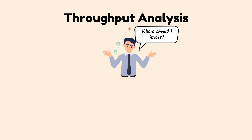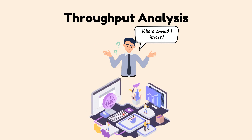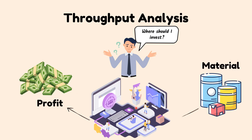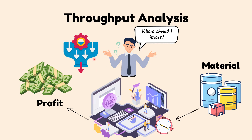Under this method, the entire company is considered as a single profit generating system. Throughput is measured as an amount of material passing through that system. The analysis assumes that nearly all costs are operating expenses, that a company needs to maximize the throughput of the entire system to pay for expenses, and that the way to maximize profits is to maximize the throughput passing through a bottleneck operation. A bottleneck is the resource in the system that requires the longest time in operations. Managers should always place a higher priority on capital budgeting projects that will increase throughput or flow passing through the bottleneck.